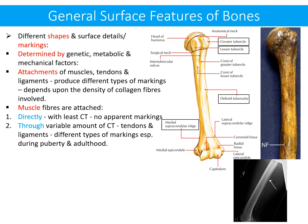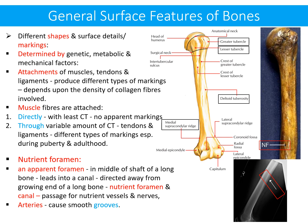General surface features of bone are present in different shapes and markings, determined by genetic, metabolic and mechanical factors such as attachment of muscles, tendons and ligaments, which produce different types of markings dependent on the density of collagen fibers involved. Muscles may attach directly with least connective tissue — producing no apparent marking — or through tendons and ligaments, producing markings especially during puberty and adulthood. Another surface feature is the nutrient foramen, an opening in the middle of the shaft of a long bone.